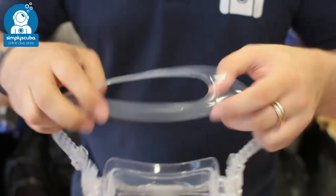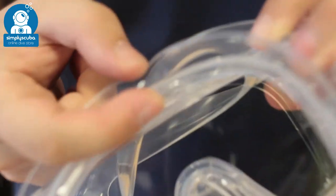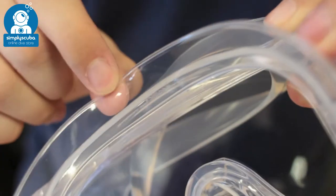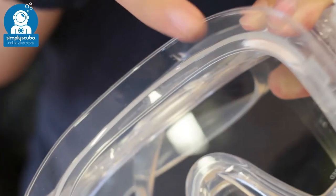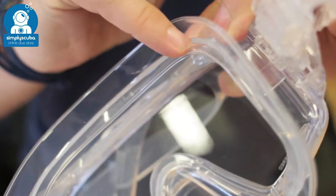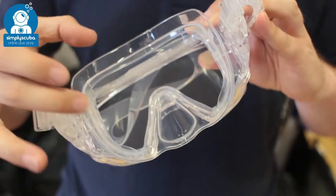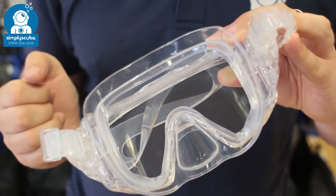Then inside the mask, you have a double skirt design. That means on the inside you have this second skirt, and on the outside you have another skirt. This creates a very wide seal that goes all the way around your face, creating that sealing surface all the way around, trapping the air inside and stopping the water from getting in.